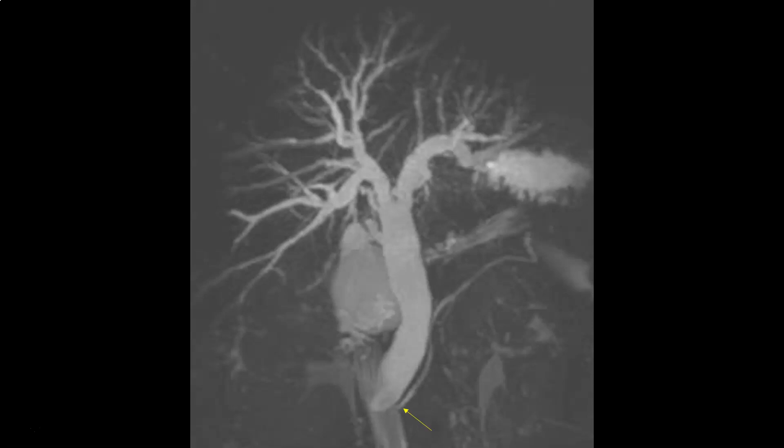We can see the pancreatic duct joining the lower end of the common bile duct as expected normally. We are having two communicating ducts — one of them is dilated and the other is not — and to explain this situation we have two scenarios. Either we are dealing with an obstructing malignant neoplasm of the lower end of the two ducts, that's to say at the ampulla of Vater or the pancreatic head, but in this case we cannot explain why the pancreatic duct is not dilated.